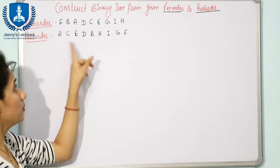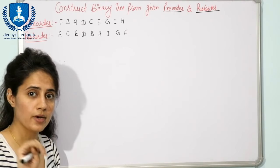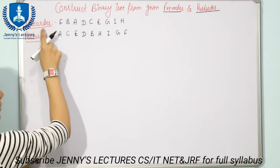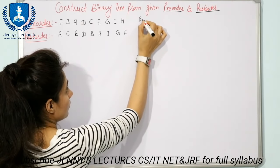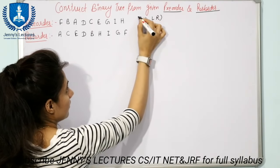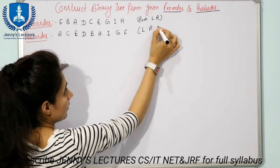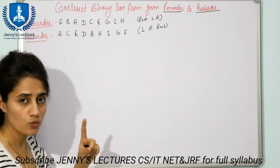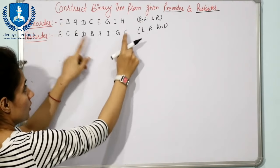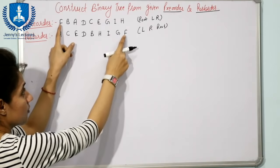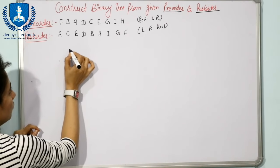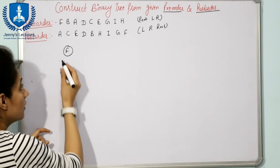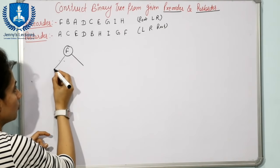Let us take this example. We have pre-order and post-order given, and you are supposed to construct a binary tree. In pre-order traversal the sequence is root, left, right, and in post-order it is left, right, root. First step: find out the root. The first element in pre-order is root, and the last element in post-order is also root - both are F. So F is the root of the tree.